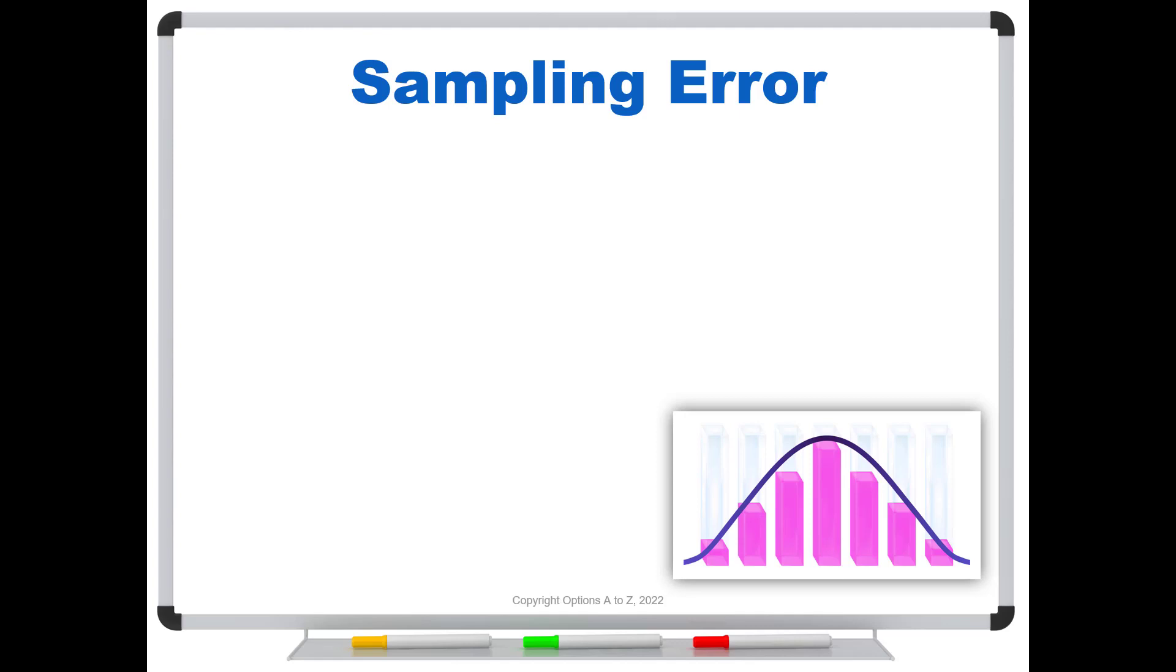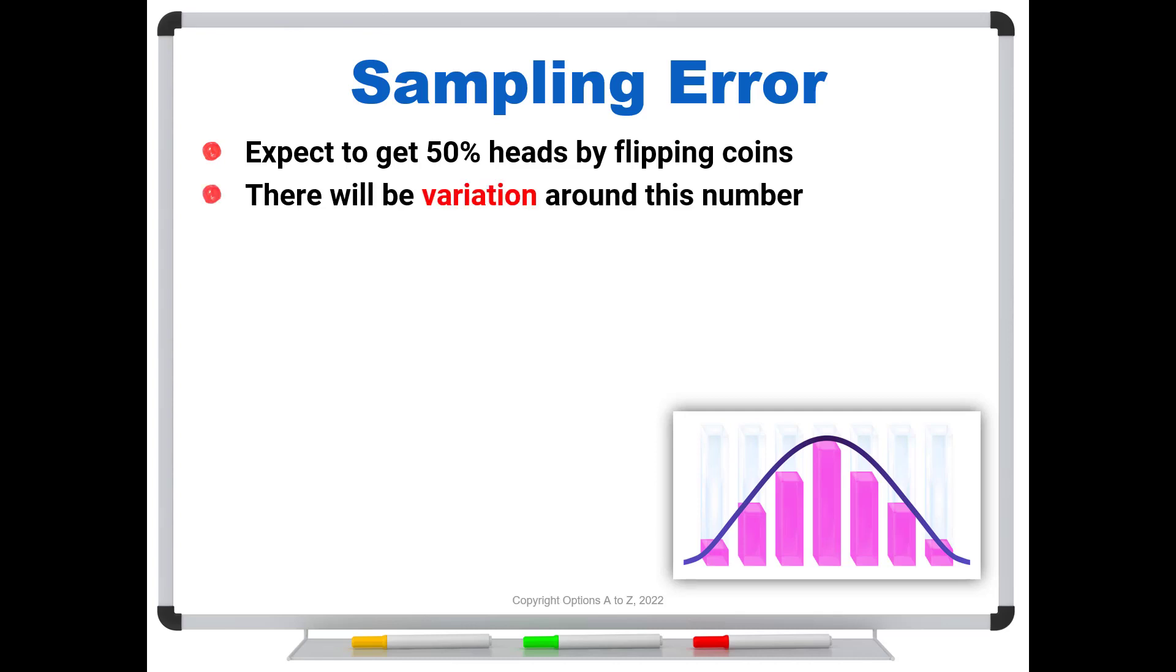What is sampling error? Let's do a simple example where we are going to flip coins. So regardless of how many times we flip it, you would expect to get 50% heads by flipping coins. Or you could say 50% tails, same thing, but we're just going to focus on the heads. We would expect to get 50%, but there will be variation around this number. It's not always going to be exactly 50%. So how much variation should we expect? Well, as you can imagine, there is a mathematical formula. Don't worry about the formula, but I'm going to show it to you here so you can see how these calculations are being done.